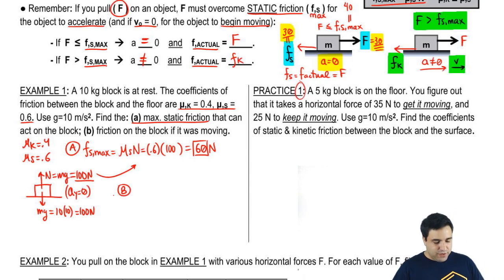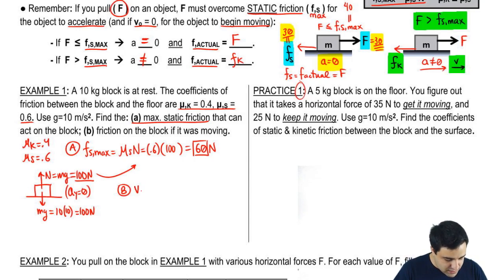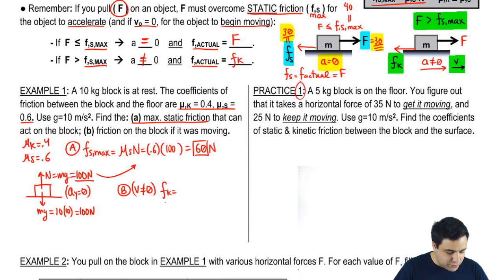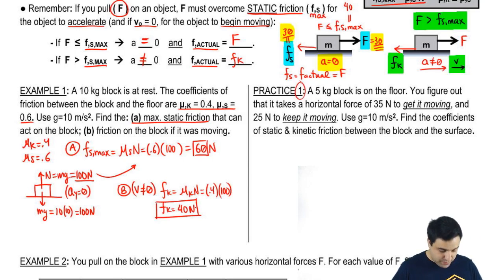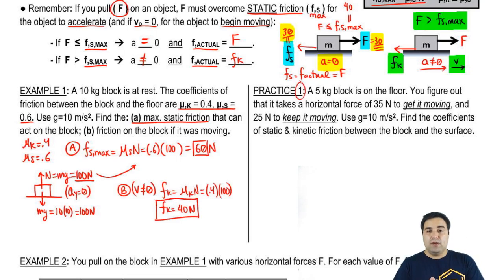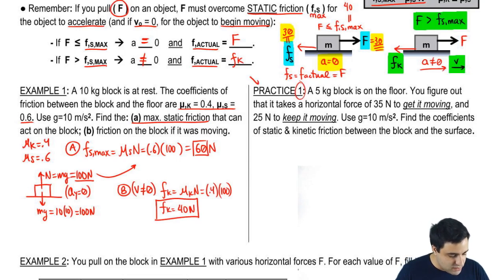For part B, I want to know the friction on the block if it was moving. If the block is moving, velocity is not zero, and I use kinetic friction, which equals mu k times normal. Mu k is 0.4 and normal is 100, so kinetic friction equals 40 Newtons. If this object was moving, it would be going up against 40 Newtons of friction. Now pause and try the practice problem.